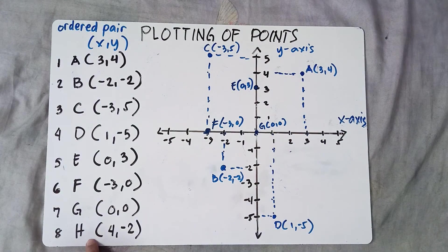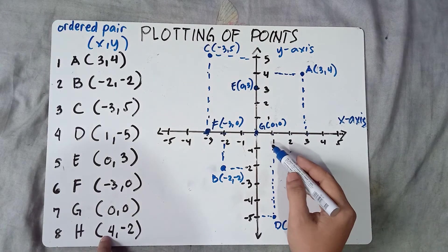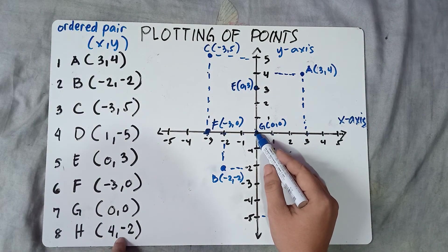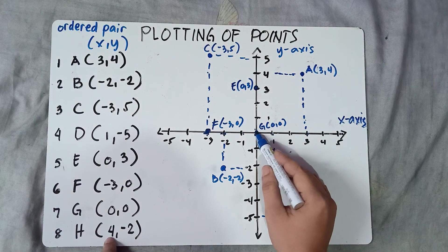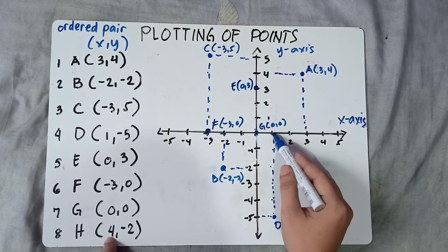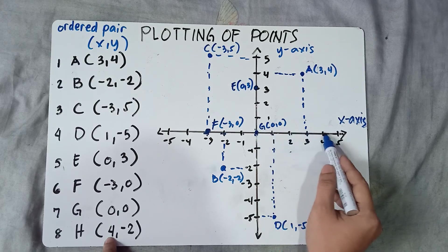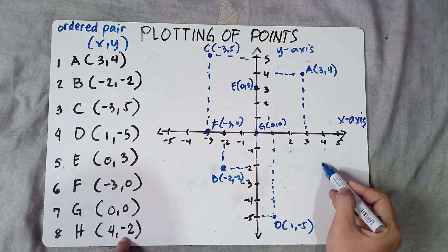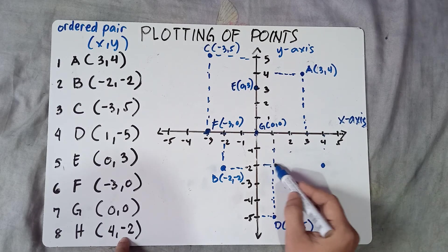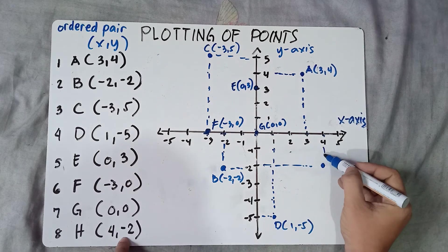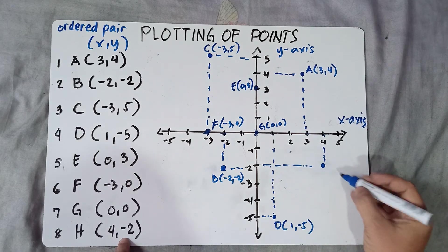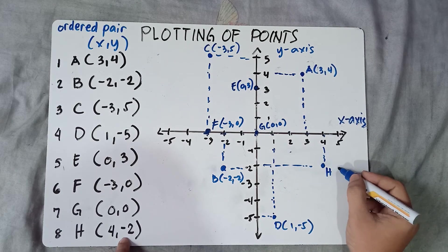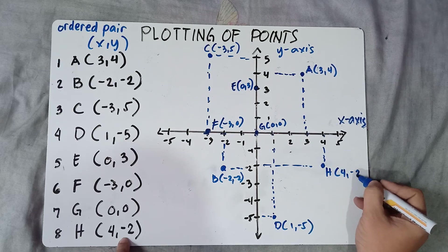Last number, H: (4, -2). Since x is positive 4, you move 4 units to the right. Starting from the origin — 1, 2, 3, 4. And since y is negative 2, you move 2 units downwards — 1, 2. Label H equals (4, -2).